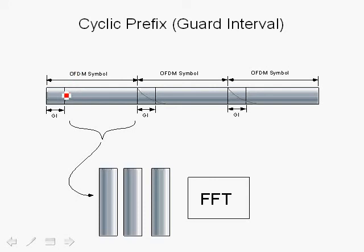If we send OFDM symbols right after each other, each with this guard interval, then at the receiver we take the OFDM symbol, identify the guard interval, toss it out, and take the 64 samples created through the inverse FFT process. We then compute the FFT and recover the carriers to do the whole demodulation process. At the receiver it's very simple: take each OFDM symbol, throw away the guard interval, and use the FFT of the 64 samples to demodulate the signal.